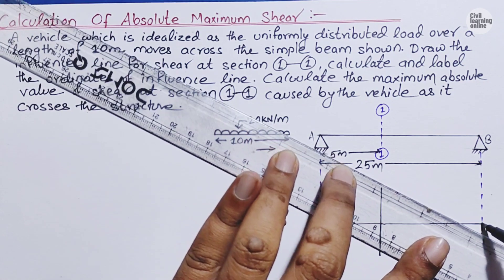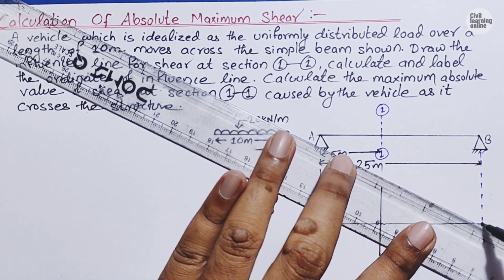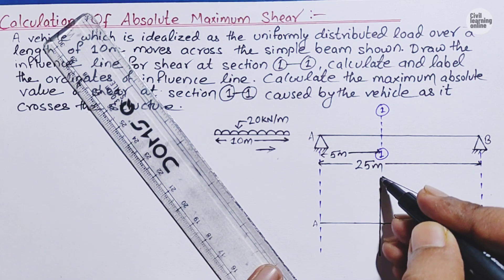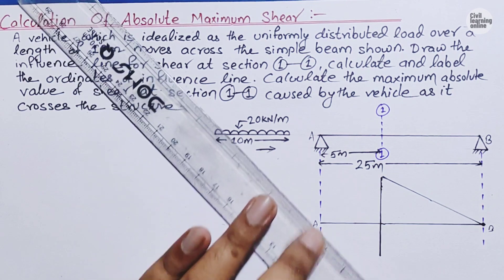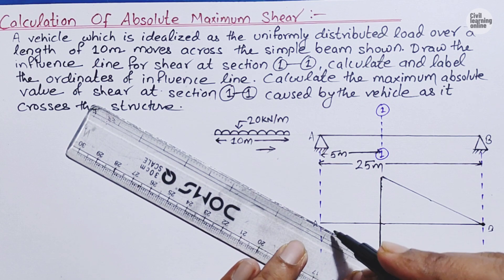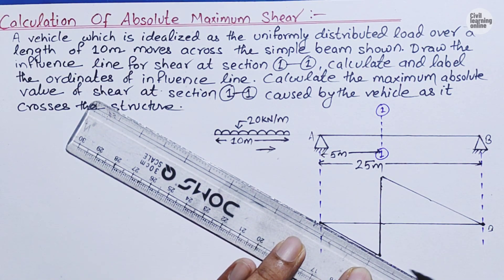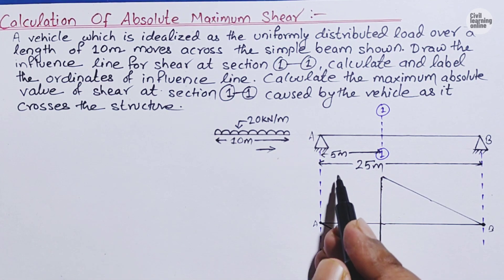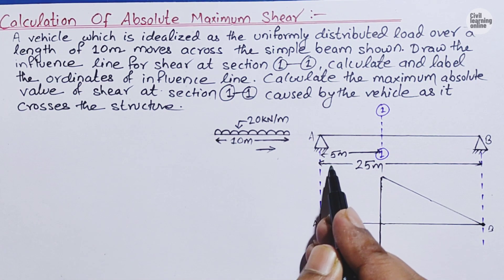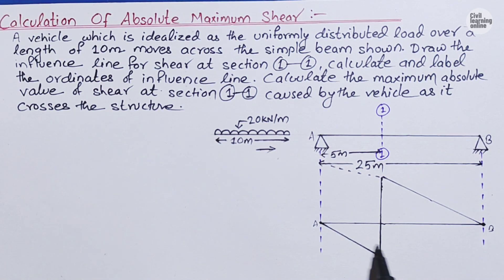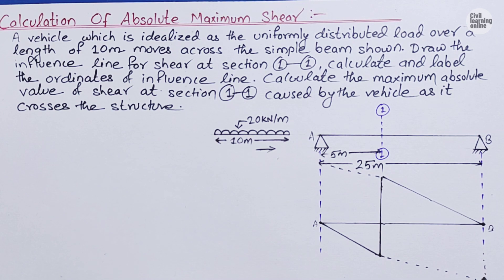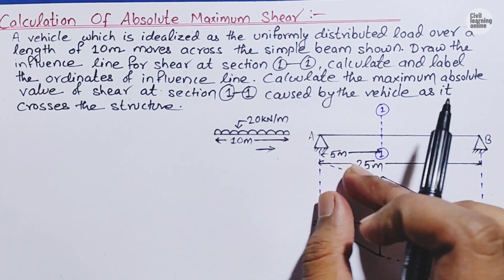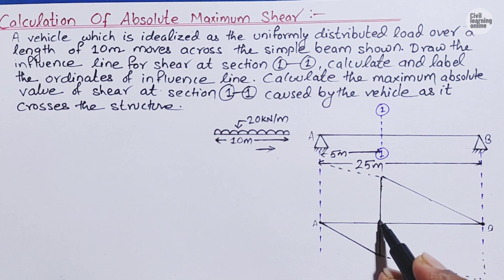From the baseline, draw a triangle from A to the section and similarly from the section to B. This forms the influence line diagram for shear at section 11. The upper triangle represents the portion related to reaction at A, and the lower triangle represents the reaction at B. While drawing the influence line diagram for shear, we only retain the relevant portion. Now we need to calculate the ordinate values.